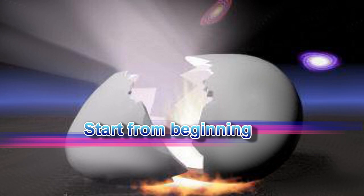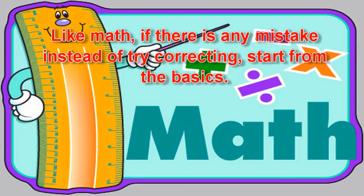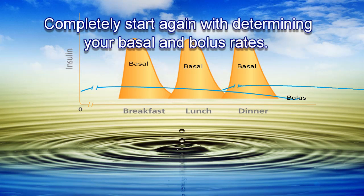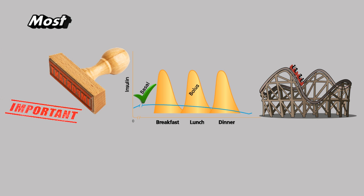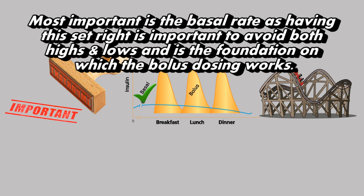Start from the beginning. Like math, if there is a mistake, instead of trying to correct it mid-way, start from the basics. Completely restart by determining your basal and bolus rates. The basal rate is most important — having it set right is key to avoiding both highs and lows and is the foundation on which bolus dosing works.